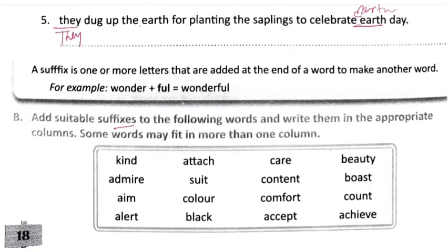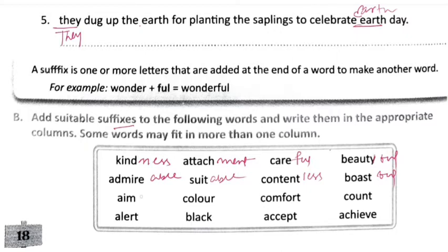Some words may fit in more than one column. Kind gives us kindness, careful, beautiful. Then we have attachment, admire gives admirable, suitable. Content gives contentless or contentful, aimless, colorful or colorless, comfortable, countable, alertness, blackness, acceptable, achievement.